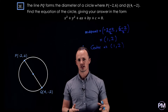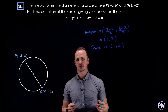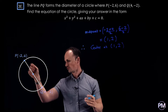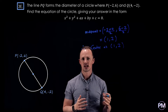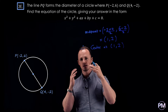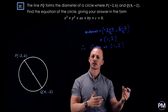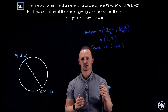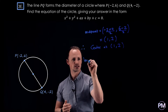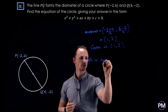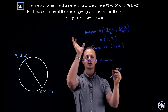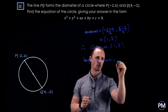Now that we know the centre, we also need to find the radius. To find the radius, we can consider the fact that the radius is half the length of the diameter. So if we find the distance between our two coordinates we can just halve that to get the radius. We'll use the distance formula to find the distance between the two coordinates.